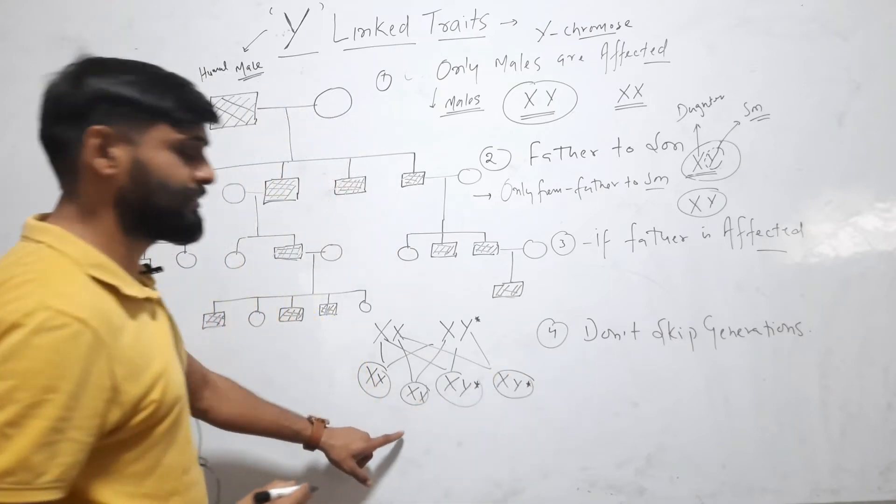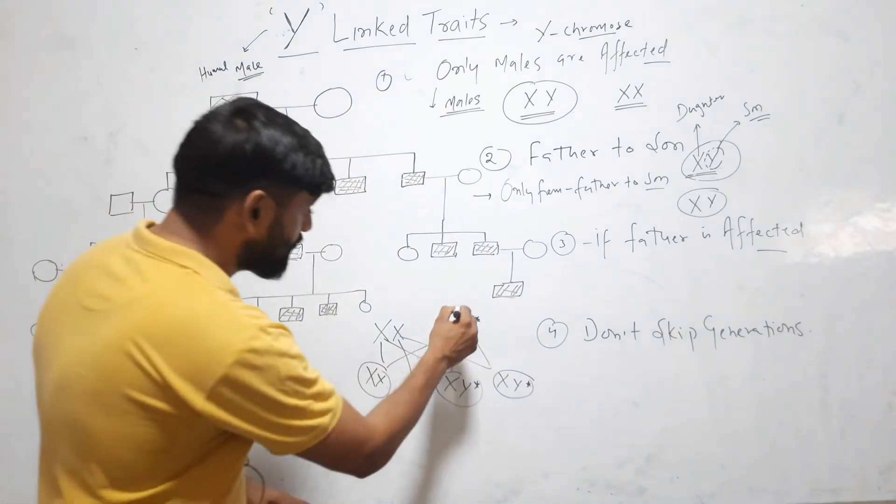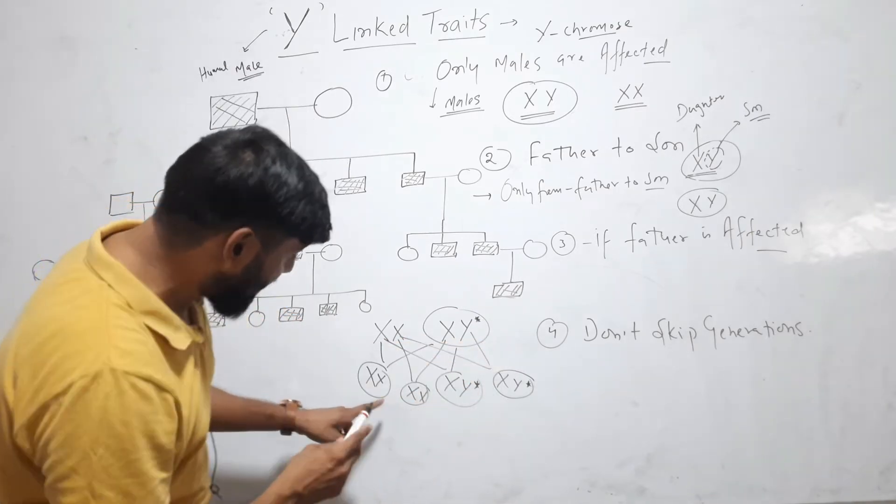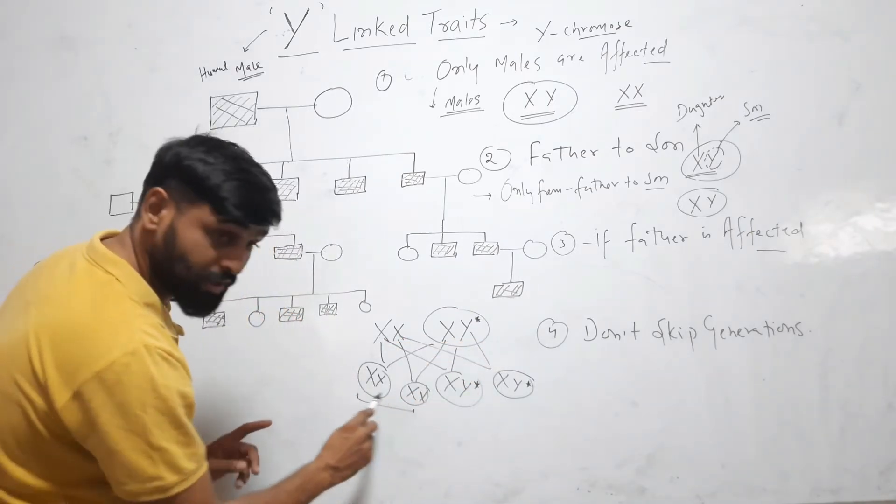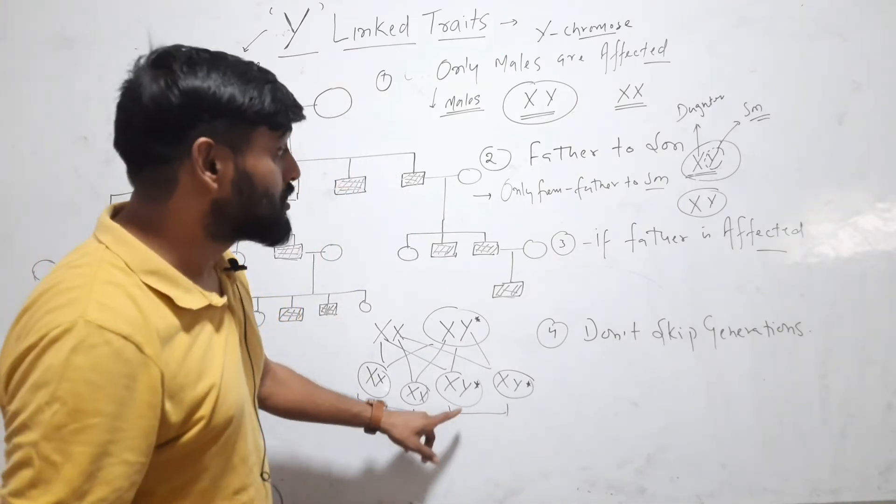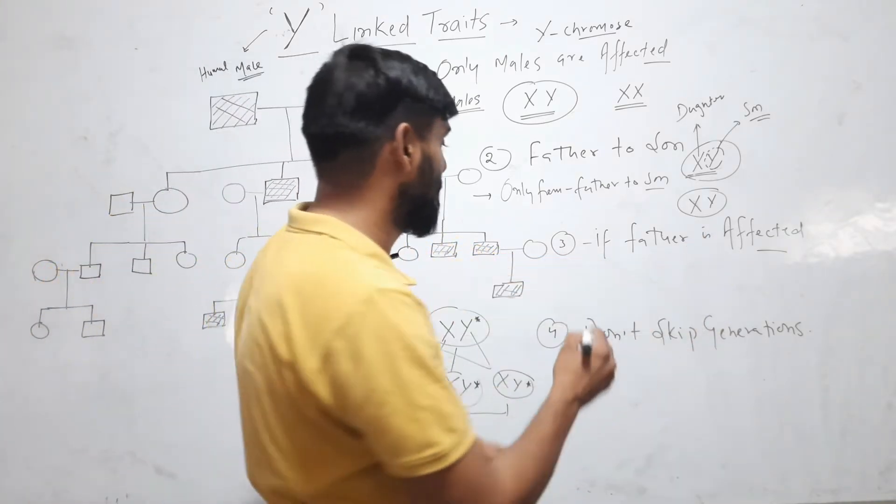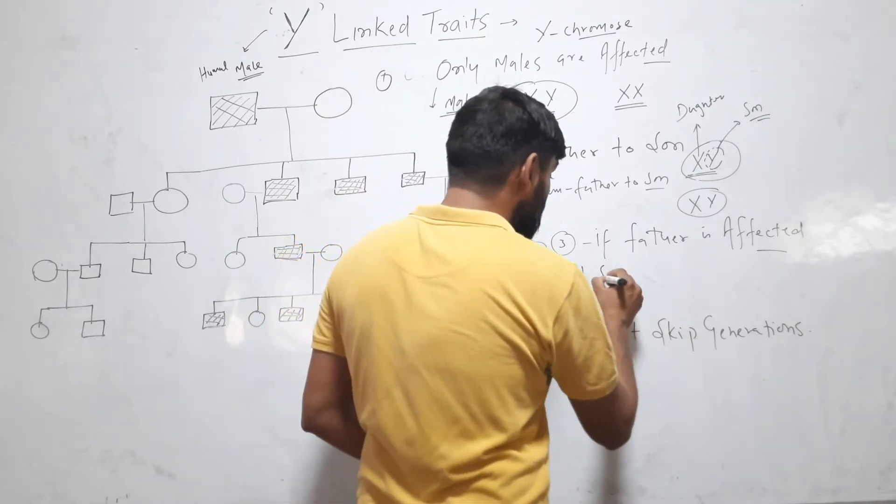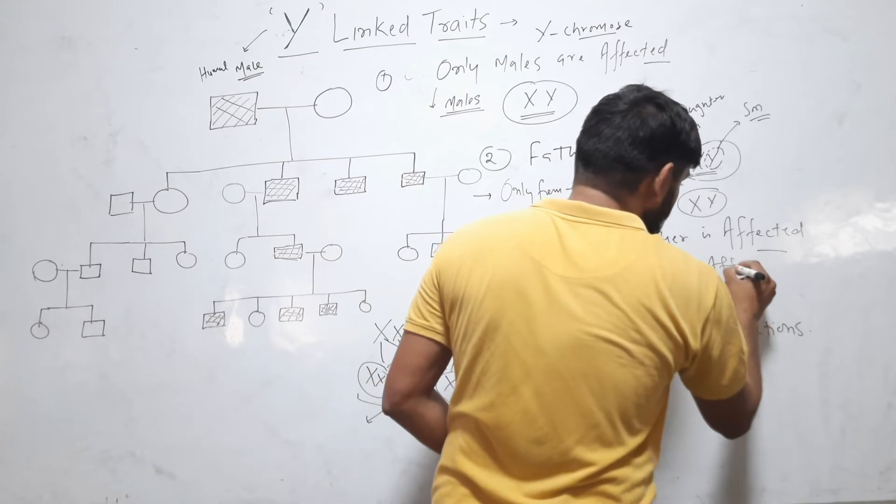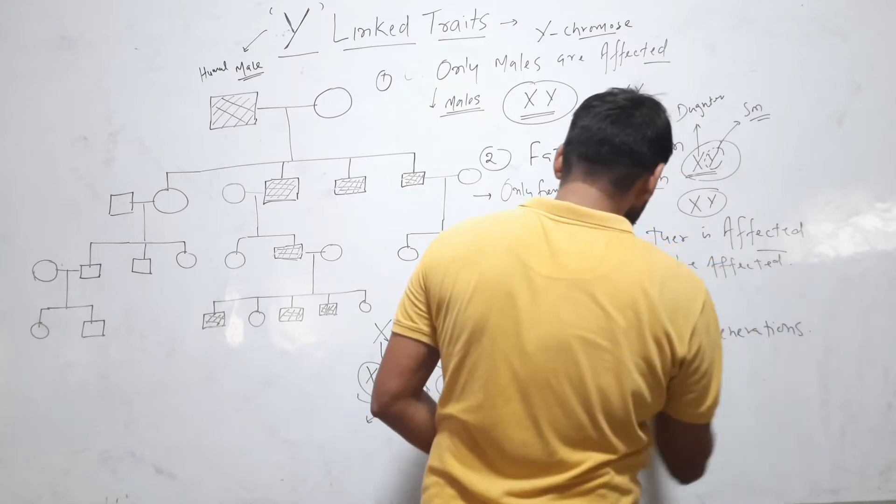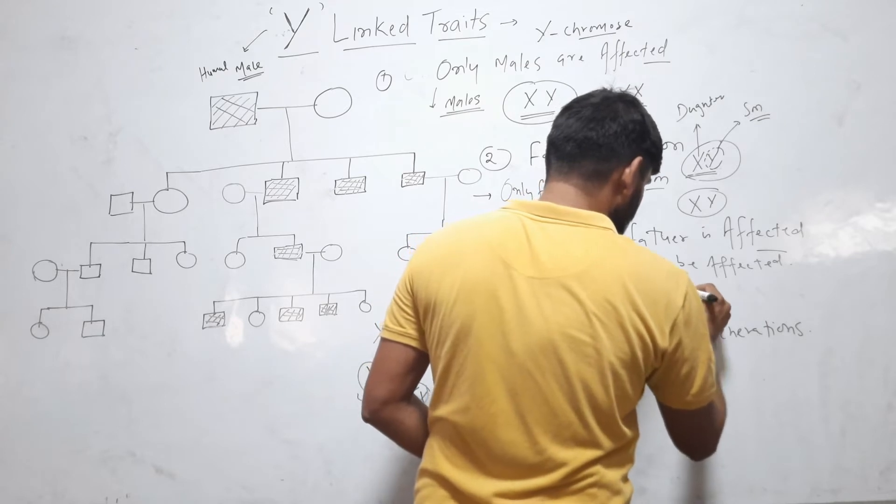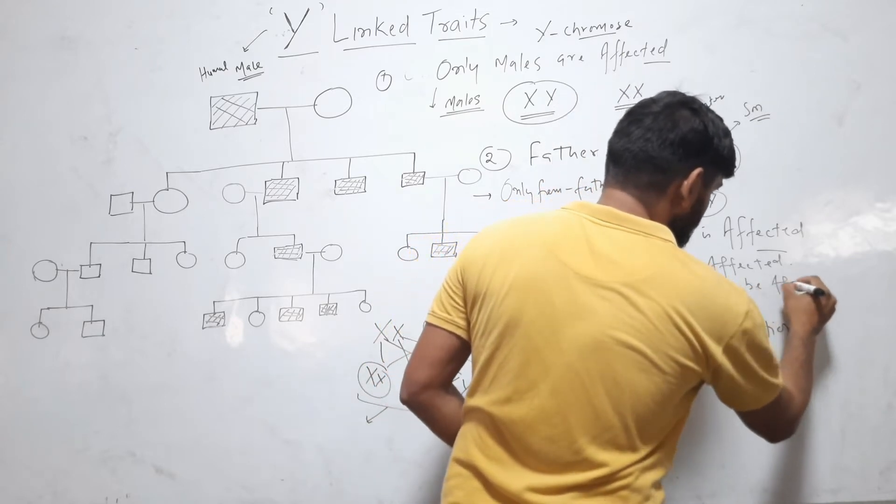Here you can see that here father is affected. In that cross, you can see that these two are daughter, they are not affected and these two are son, so these are affected. So if father is affected, all son will be affected and no daughter will be affected.